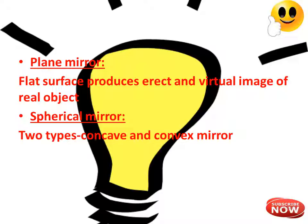Now coming to the plane mirror — a laterally inverted image is formed by a plane mirror. Stand in front of a mirror and see your own image. Stretch out your right hand — which hand does your image stretch? You will find that the left hand is stretched. In other words, the left hand of the object becomes the right side of the image and vice versa. The phenomenon of left appearing right and right appearing left on reflection in a plane mirror is called lateral inversion.